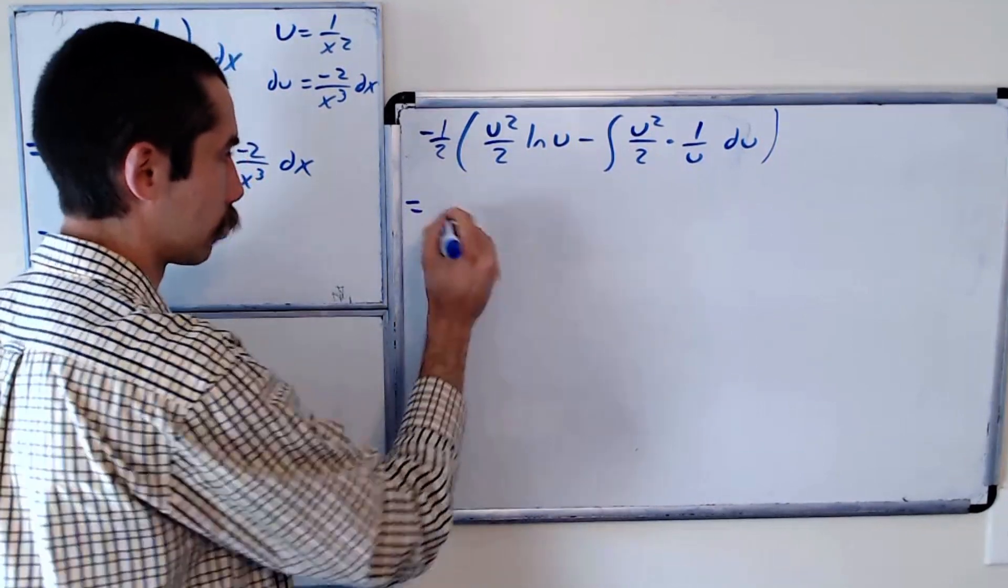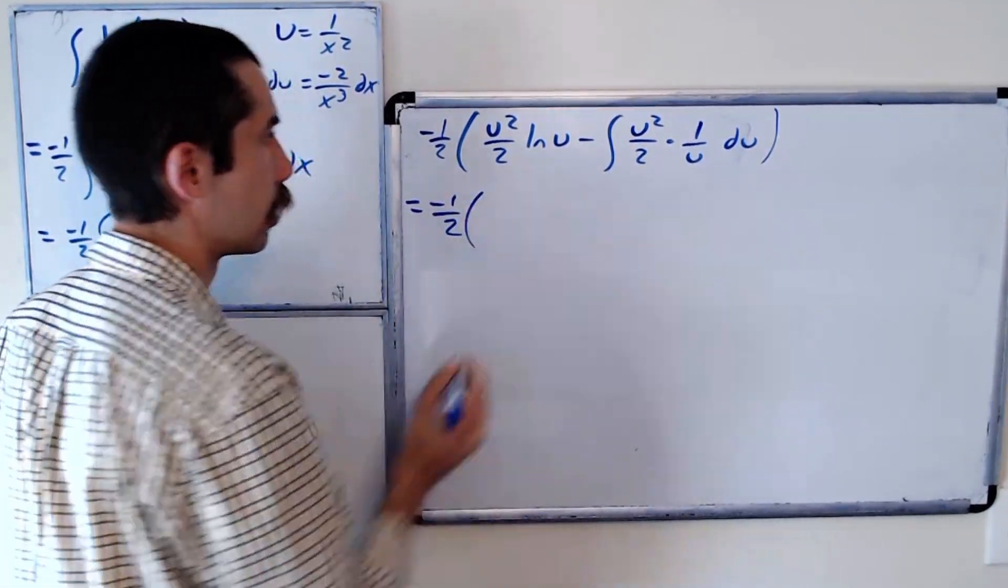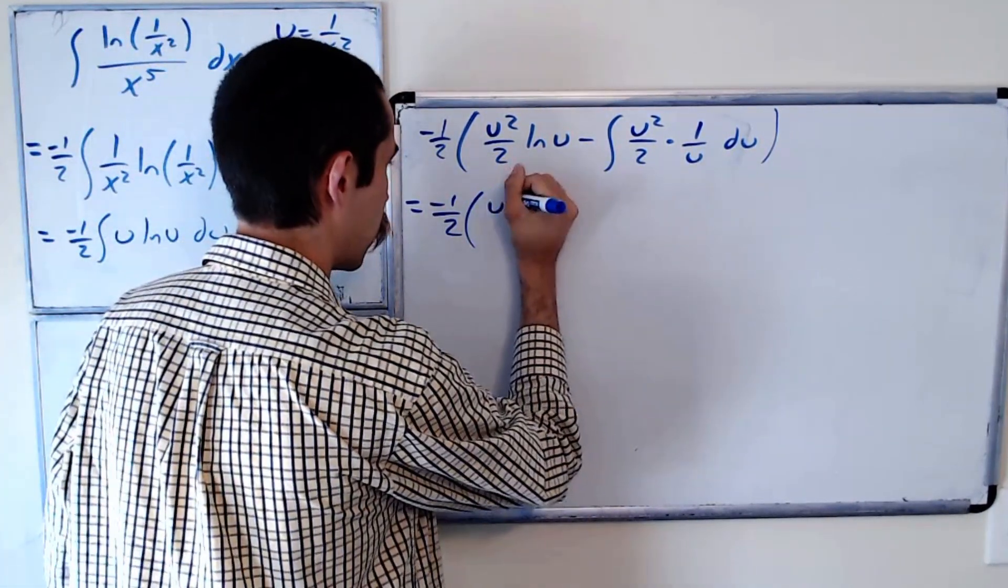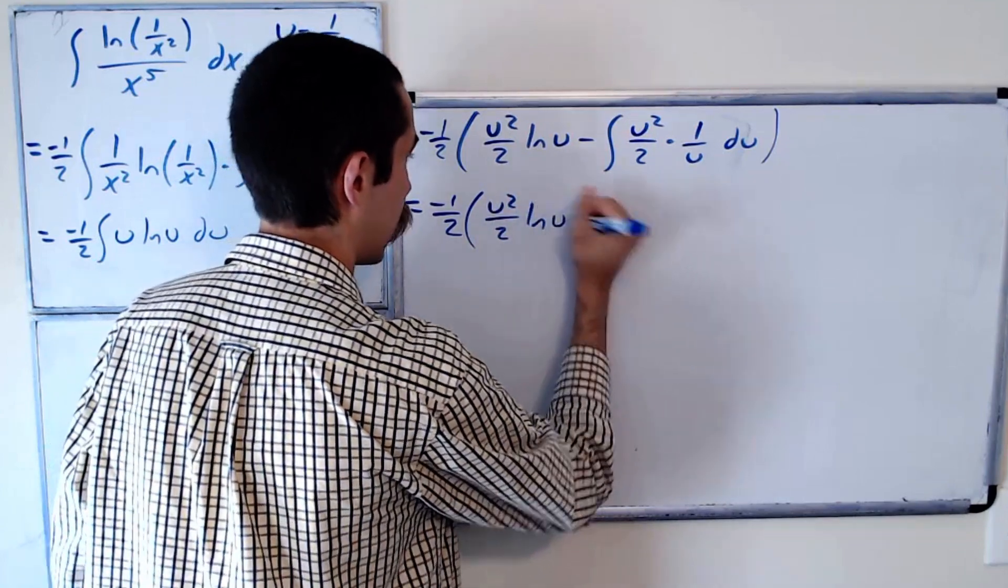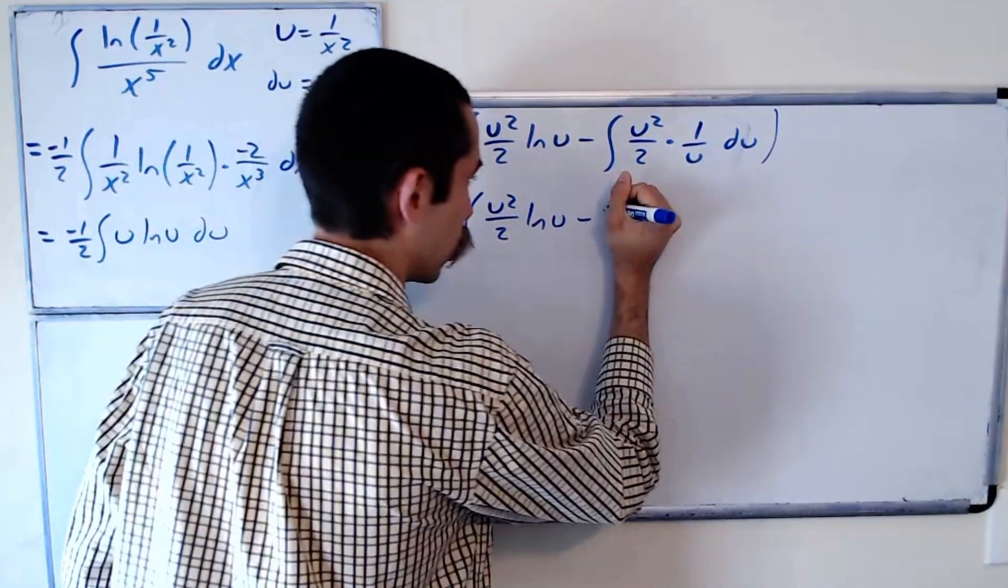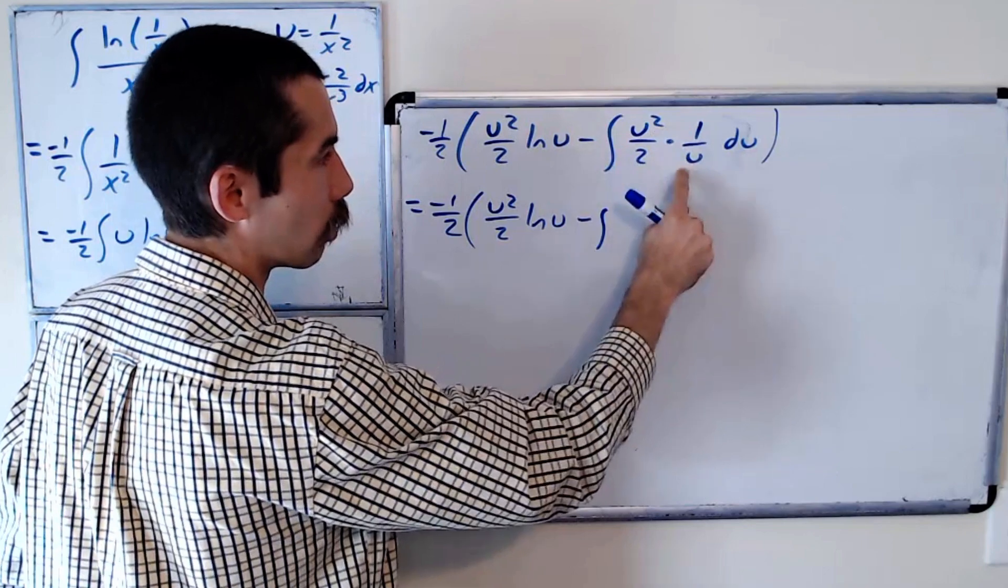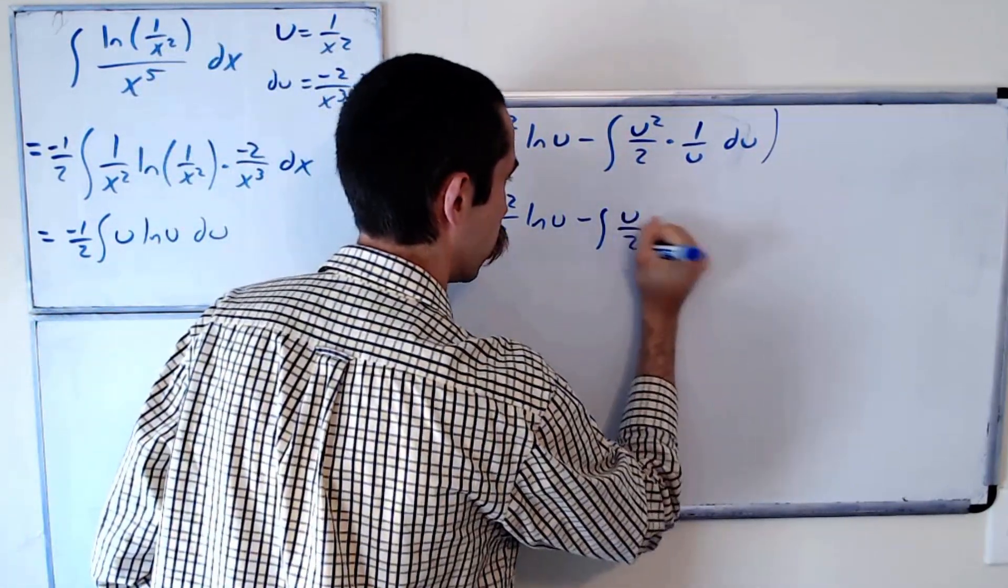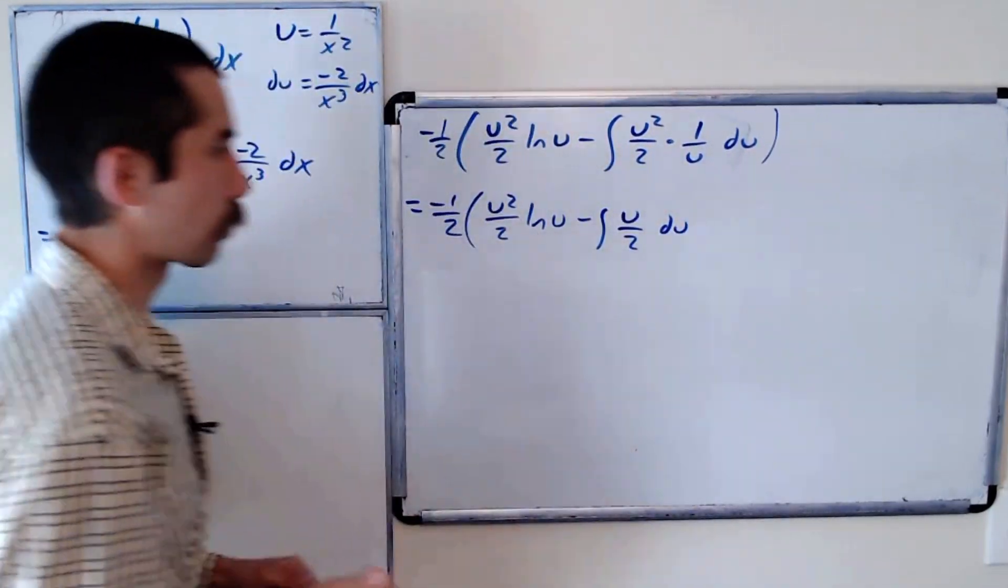Well, this is equal to negative 1 half. Negative 1 half, u squared over 2, ln of u, minus the integral, well, u squared over u is just u. u over 2, du.